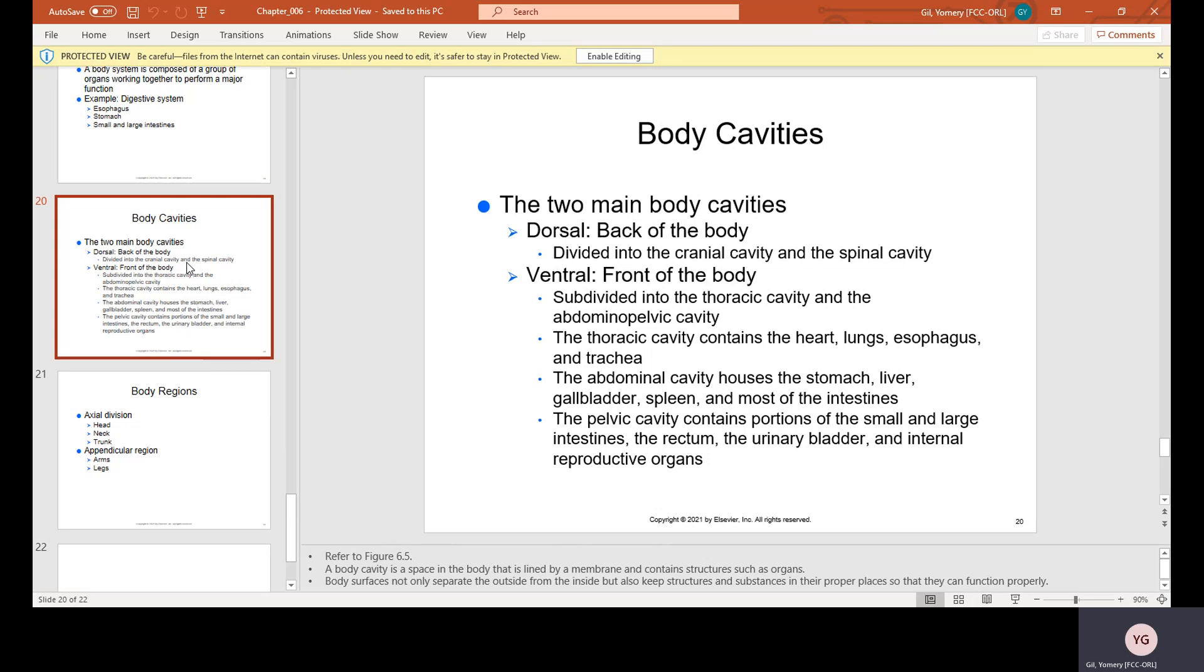The abdominal cavity houses the stomach, the liver, the gallbladder, the spleen, and most of the intestines. And then the pelvic cavity contains portions of the small and large intestines, the rectum, the urinary bladder, and internal reproductive organs.